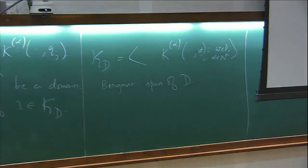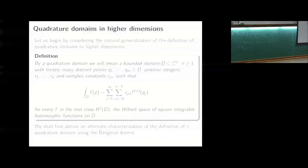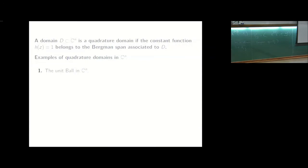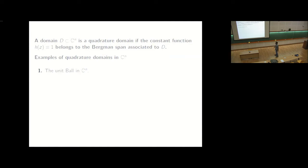So in other words I can give an alternate definition and I'll demand that a domain is a quadrature domain if the constant function one belongs to the Bergman span associated to t. So I'll use this as the working definition for quadrature domains from now. So the first few examples will be the unit ball. We in fact saw the explicit expression for the Bergman kernel there. And you can check that kz comma 0 is a constant. And in the classical way if you want to look at it it's just the mean value theorem.